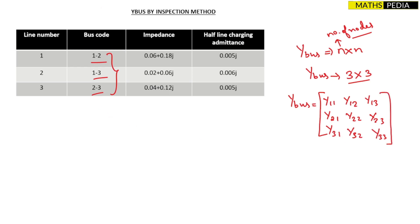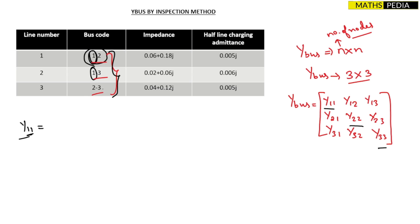Starting with the diagonal elements — y11, y22, y33 — y means admittance, so always write admittances. For y11, wherever node 1 appears you include all the admittances associated with it. Looking at the column: 1 to 2 has node 1, 1 to 3 has node 1, but 2 to 3 does not. So for y11, you add all admittances from those rows.